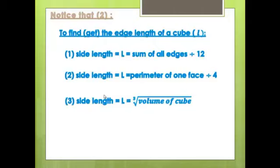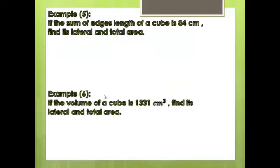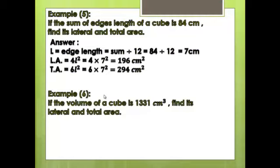Example 5: The sum of all edge lengths of a cube is 84 cm. Find its lateral and total area. First, L = 84 ÷ 12 = 7 cm. Lateral area = 4L² = 4 × 7² = 196 cm². Total area = 6L² = 6 × 7² = 294 cm².